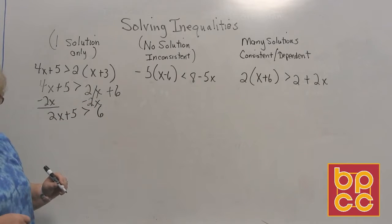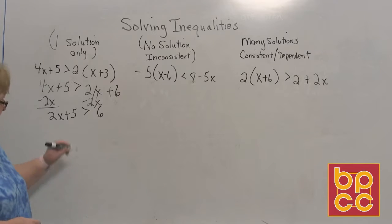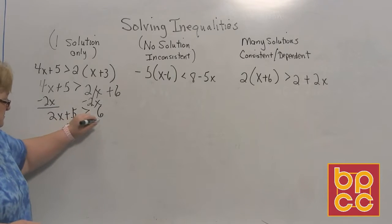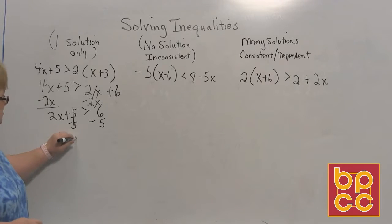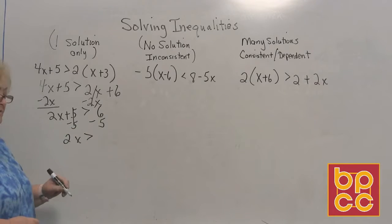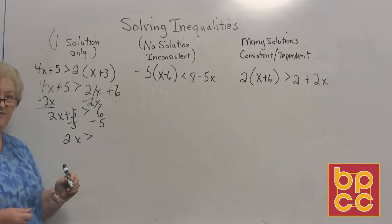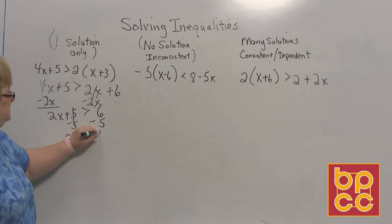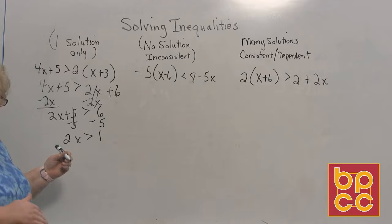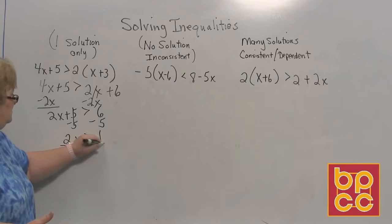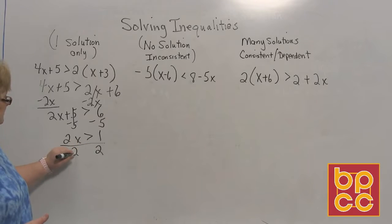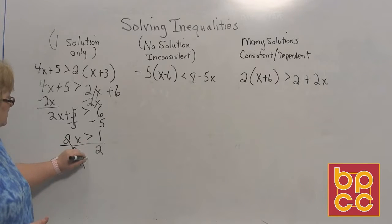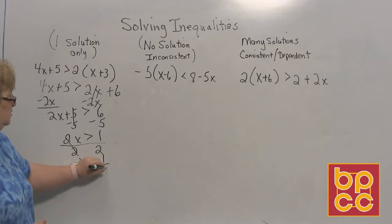This is right along the lines of what we've been doing, isn't it? Okay, now let's have the 5 move to the other side. Take away 5, take away 5. We now have 2x is greater than 6 and a negative 5 would be a positive 1. Now we can't stop there because we have 2x. Let's divide both sides by 2. And when you do that, x will be greater than 1 half.